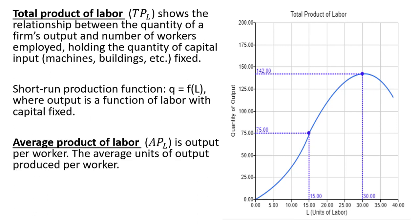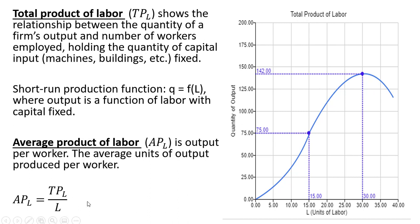The average product of labor is output per worker — it's the average units of output produced per worker. We can calculate the average product of labor by taking the total product of labor, which is the firm's output, and dividing it by the number of workers that produce that output.